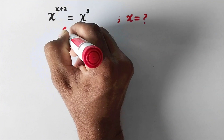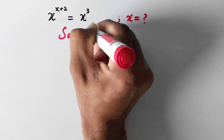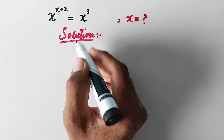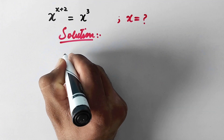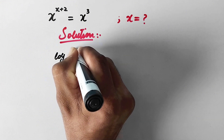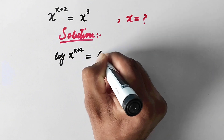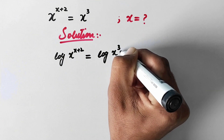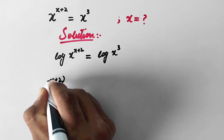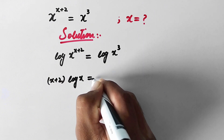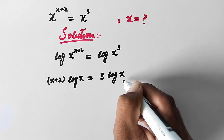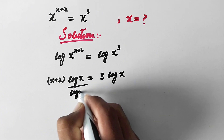Let us see the solution. We will solve the problem by two methods. By the first method, in the first step we will take log on both sides. So here it will be log of x to the power x plus 2 is equal to log of x to the power 3. And in the next step, it will be x plus 2 times log x is equal to 3 log x. What we will do next is divide both sides by log x.